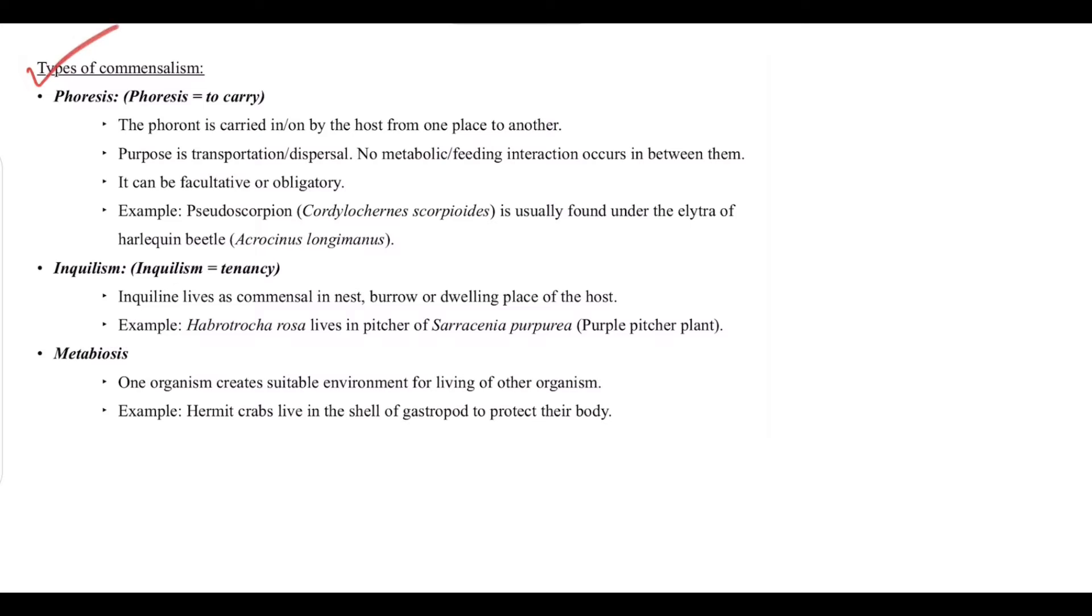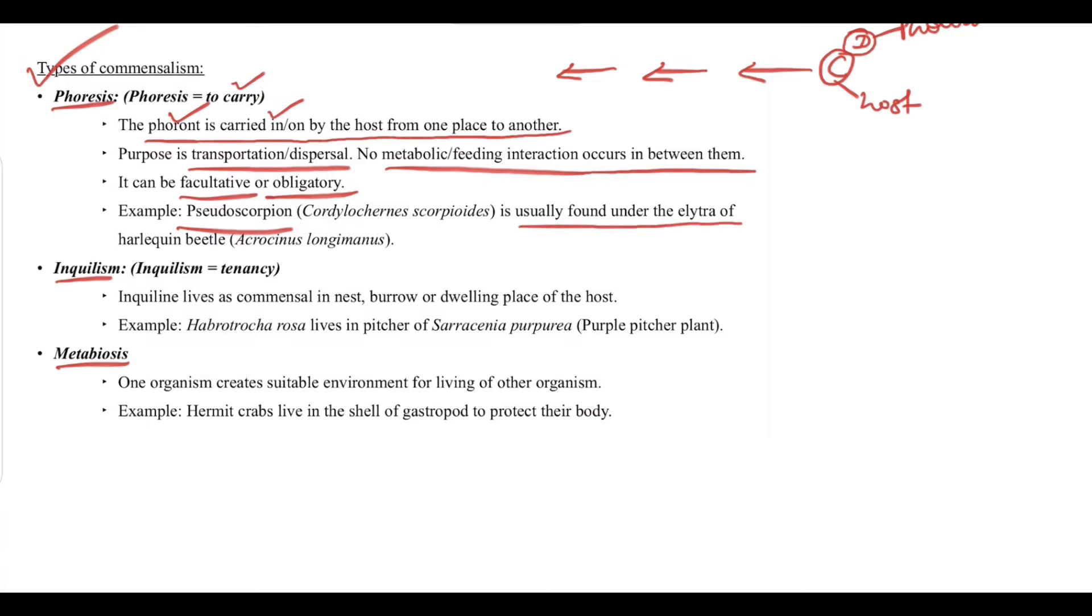We have types of commensalism: phoresis, inculism, and metabiosis. Phoresis means to carry. The phoront is carried in or on by the host from one place to another. Purpose is transportation or dispersal. No metabolic feeding interaction occurs between them. It can be facultative or obligatory. For example, pseudoscorpion is usually found under the elytra of harlequin beetle.